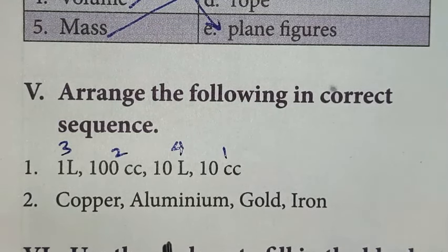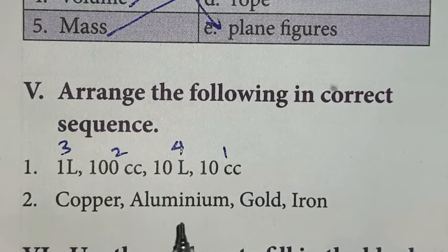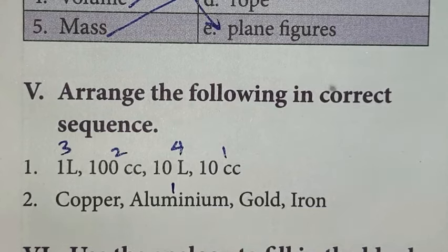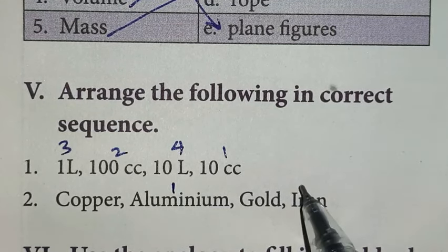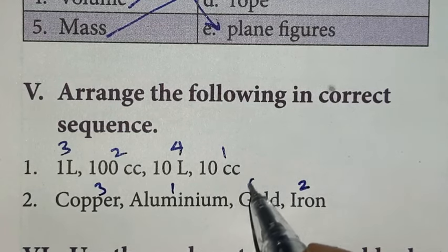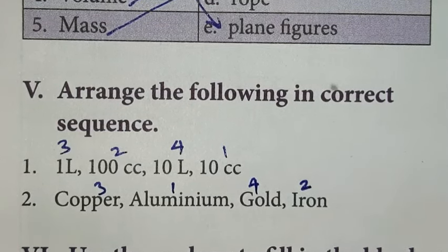Second one, according to the density, we have to write in the correct sequence. First, first one is aluminum. Next, denser one is iron. Next, denser is copper. Next, denser is gold.